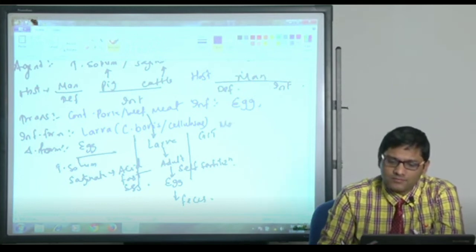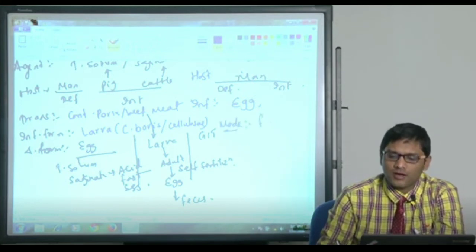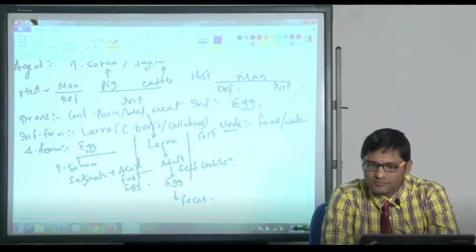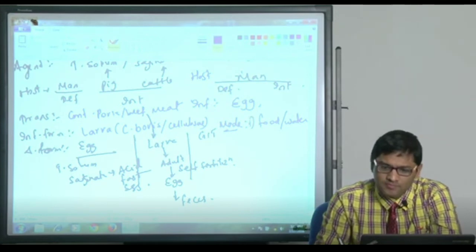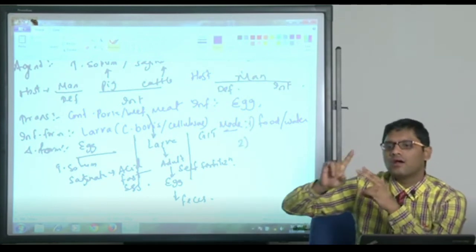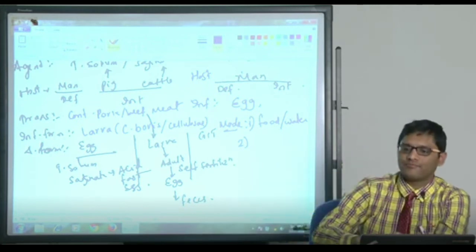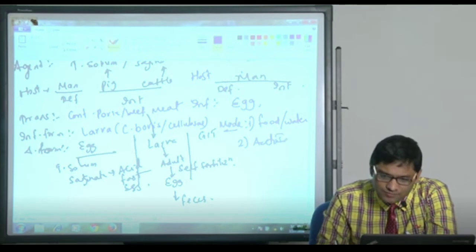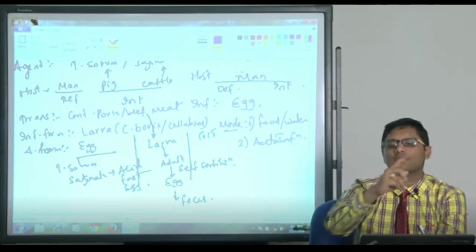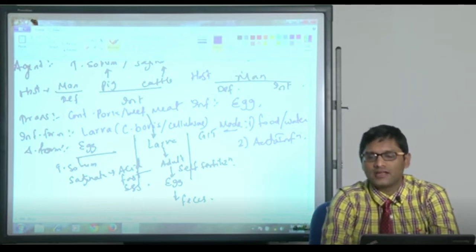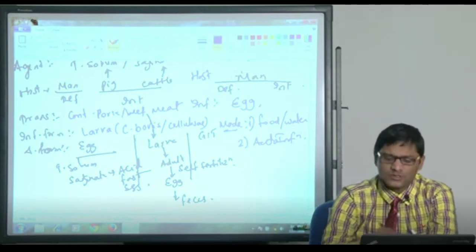Mode of transmission: contaminated food and water containing eggs, this is the main mode. It has one more mode of transmission - when definitive host and intermediate host is same, that leads to auto-infection. Auto-infection is a feature seen in cysticercosis, not in intestinal tineasis.